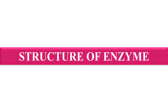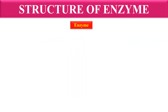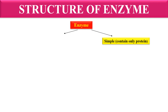Now let's discuss the structure of enzymes. Enzymes may be divided into two kinds. The first is simple enzymes — these are enzymes which only have protein molecules, formed only of a protein chain. They do not have any other component. Examples of simple enzymes include urease, amylase, and papain.